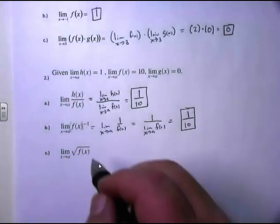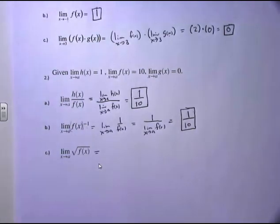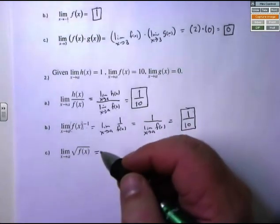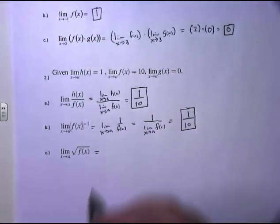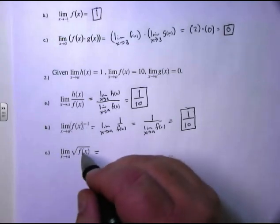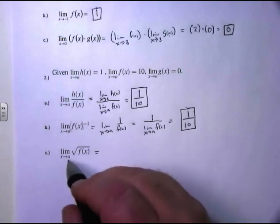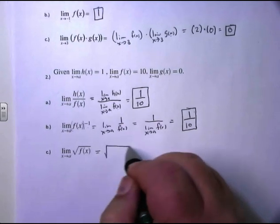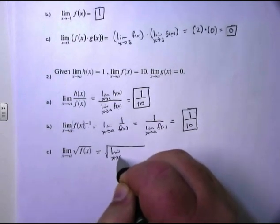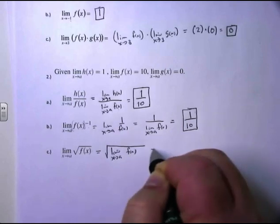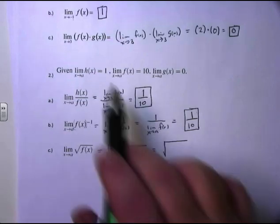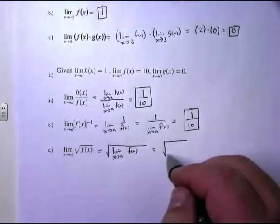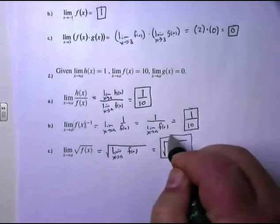Regardless of whether it's a negative 1 power or a square root — a square root is a half power — the function is inside the square root. According to our limit laws, the limit goes after wherever the function is. So, the limit as x approaches a of the square root of f of x is the same as the square root of the limit as x approaches a of f of x. That limit was given as 10, so the answer is the square root of 10.